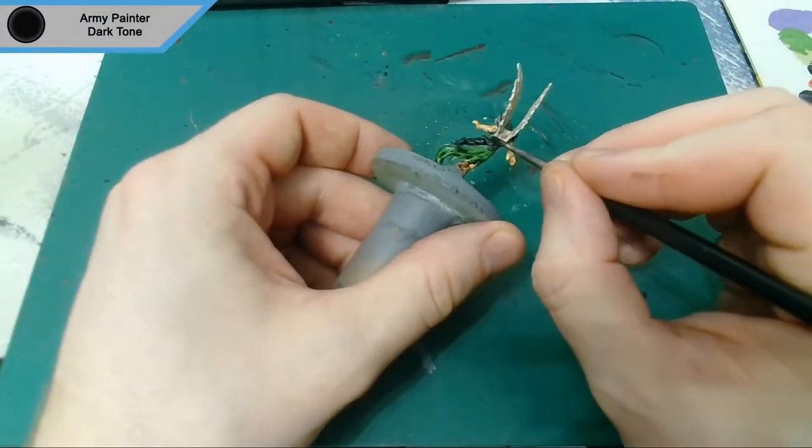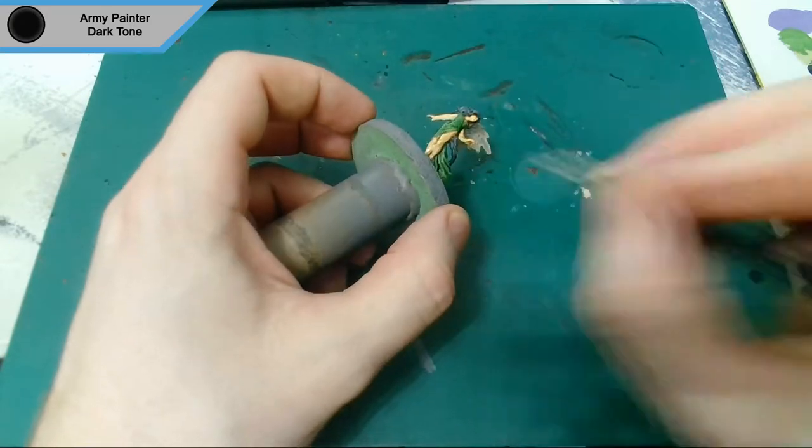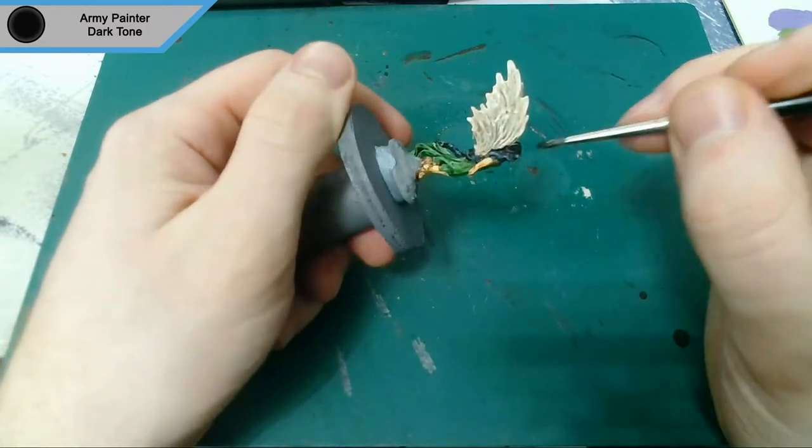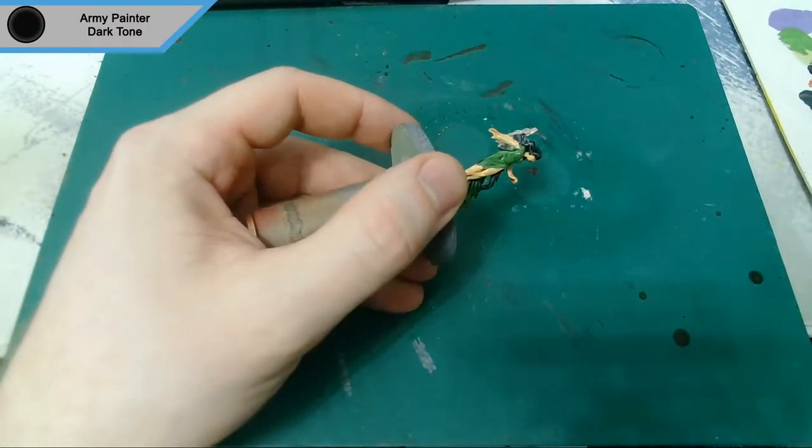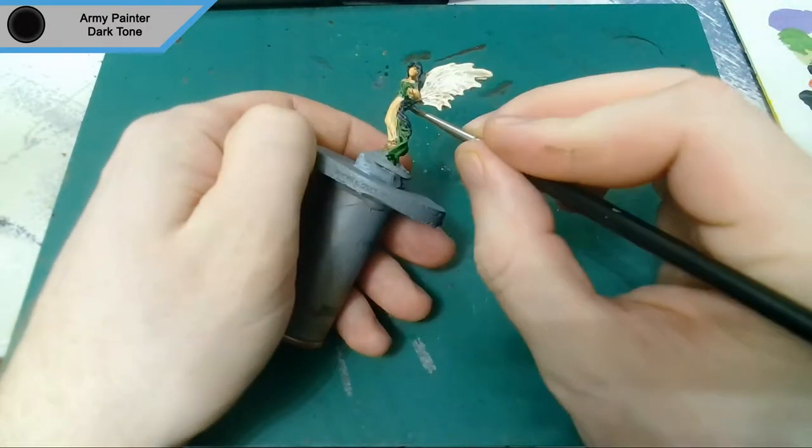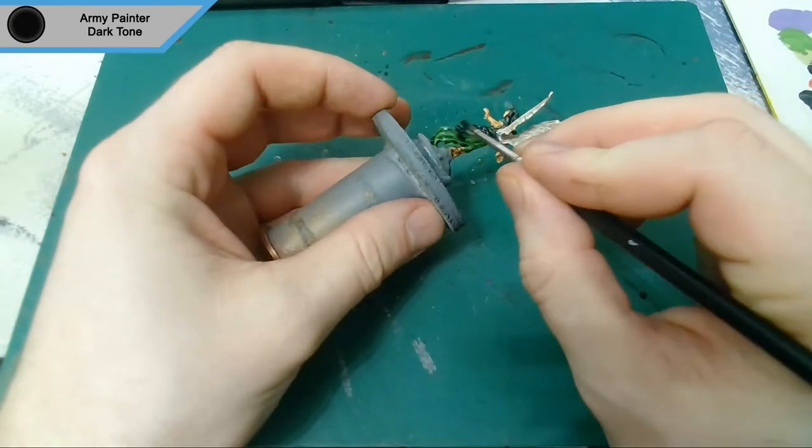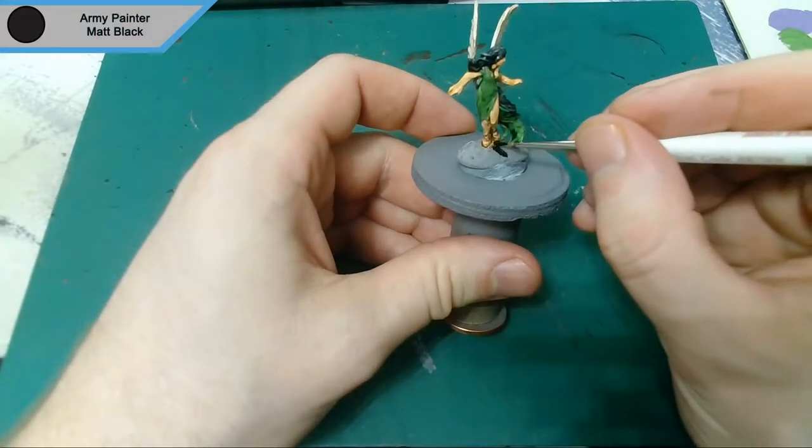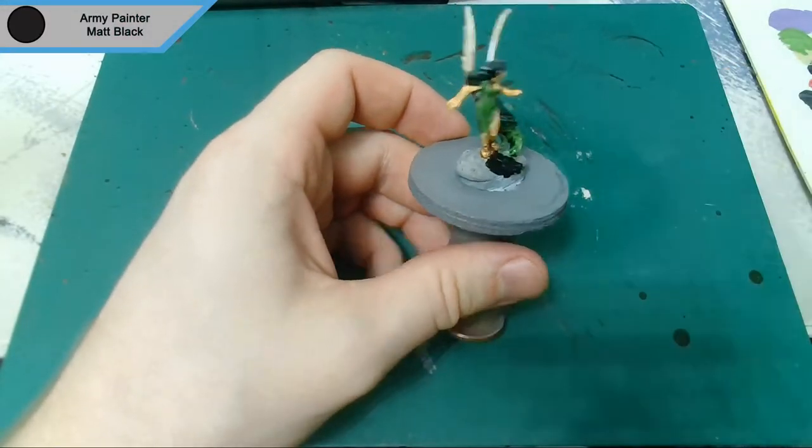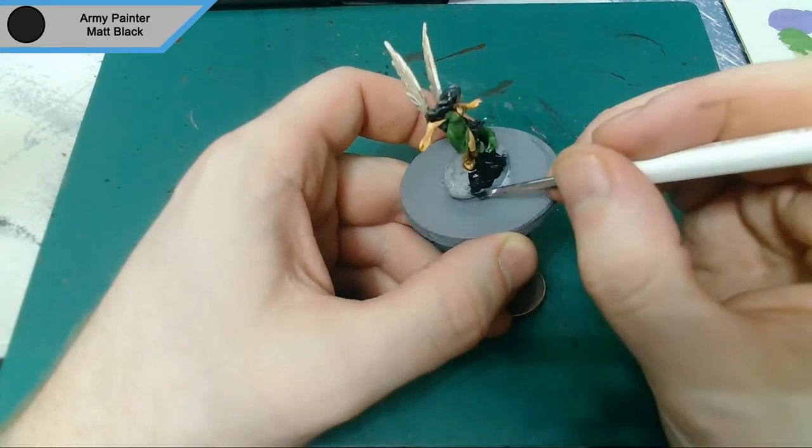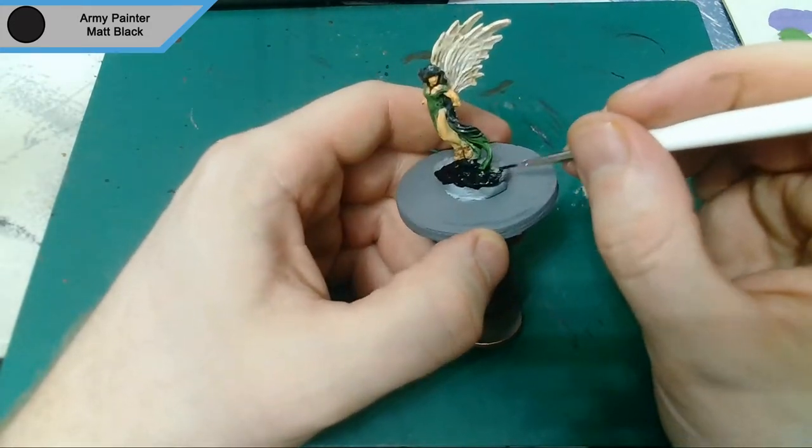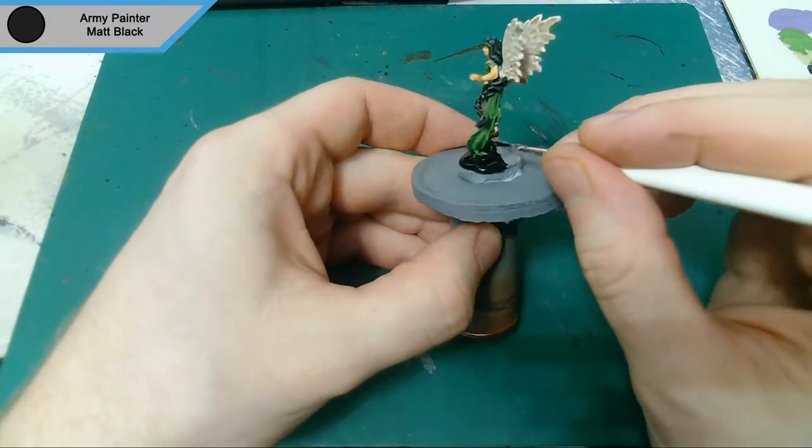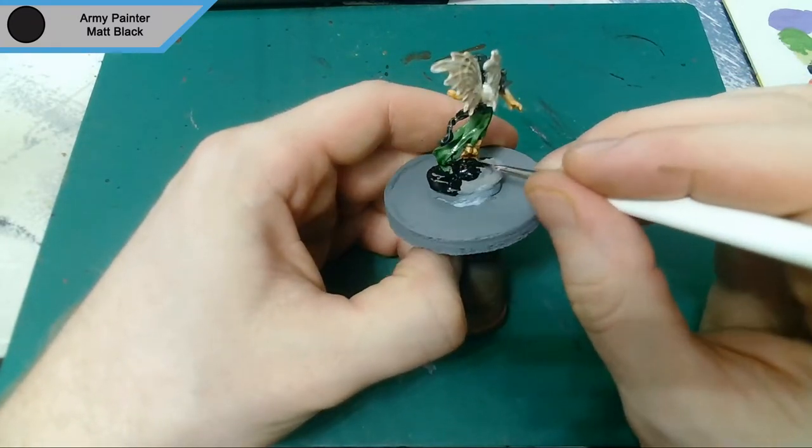The final wash we're doing is Army Painter dark tone and this is just for her hair. Normally I would do one wash, whole model. I figured I'd try something different for this and add a variation to the colors without adding highlights. Because now the wash is done, I've gone on to the basin as the model is complete and it looks good how it is. This looks more than good enough to be on a tabletop.